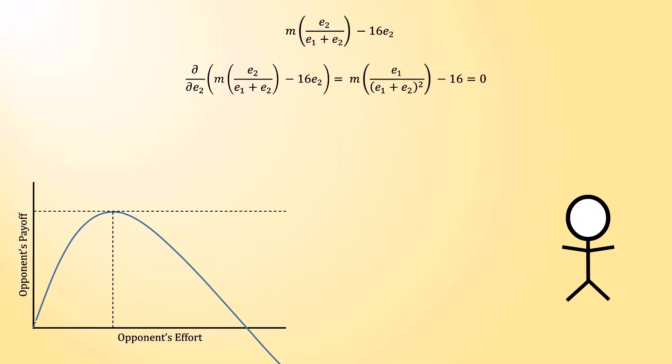You simply need to take the derivative of that function, with respect to the rival's effort, and set it equal to zero. Where that derivative is equal to zero, is where the tangent line is zero, and thus is the effort level associated with the best payoff for the rival.